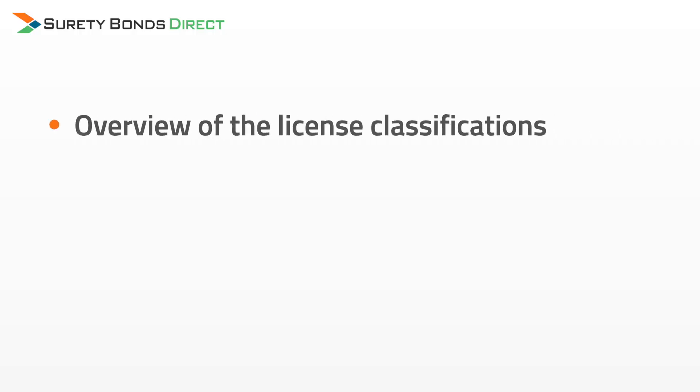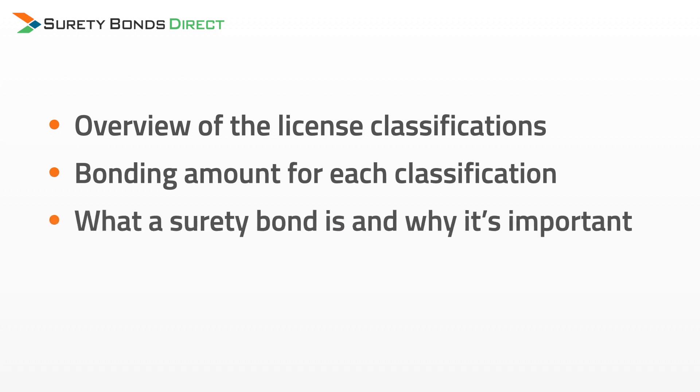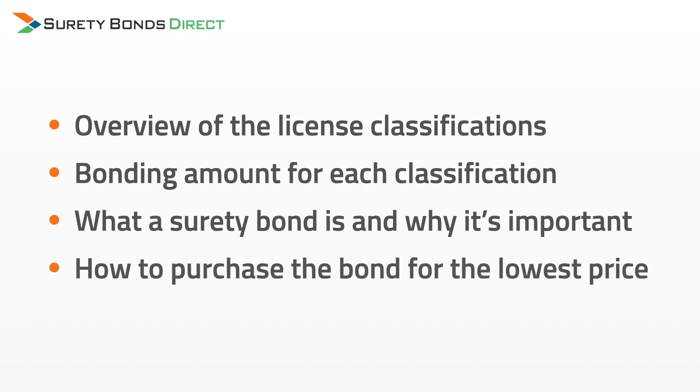When you're applying for a contractor's license in Virginia or approaching your renewal date, you may have to purchase or renew a surety bond, often called a contractor's license bond. In this short video, I'm going to help you understand a quick overview of the Virginia contractor license classifications, the bonding amount for each classification, what a surety bond is and why it's required, and how to purchase your contractor bond for the lowest possible price.